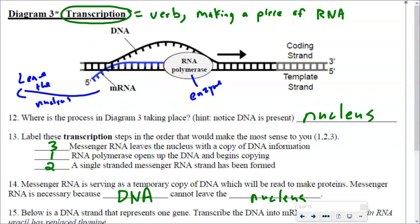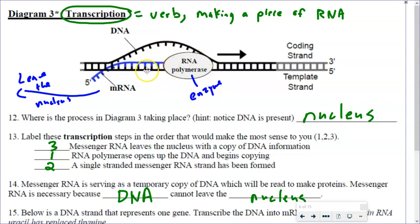The word transcription — you saw this in the video — that's a verb, and it means making a piece of RNA. So you start with DNA that has two sides. We're going to use the enzyme RNA polymerase to open up the two sides of DNA. We'll match bases with one side to build the RNA strand. And then when that's built, it's going to leave the nucleus and go to where we have to do our building.